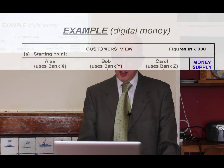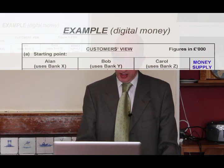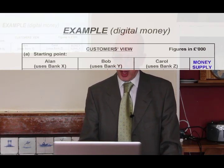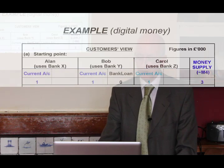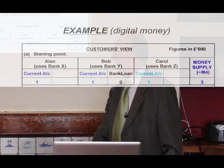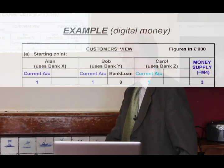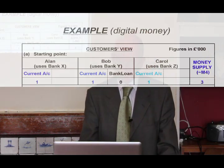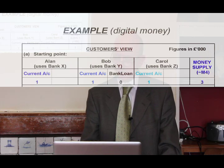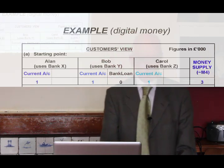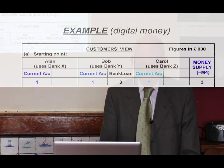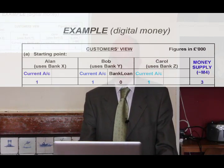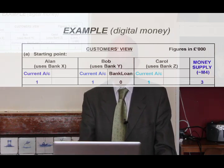We've got three characters — Alan, Bob and Carol — who each use a different bank: Bank X, Bank Y and Bank Z. To start with, we're going to say they've each got £1,000 in their current account. All the figures are in thousands. Bob is going to take out a bank loan, but he hasn't done so yet. In the extreme right-hand column we've got the money supply, which is the total of the current accounts — the amount of money circulating in the whole economy. In this minute example, it just comprises those three lots of £1,000.